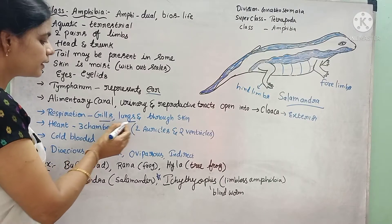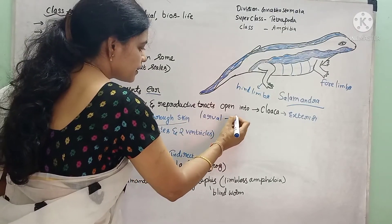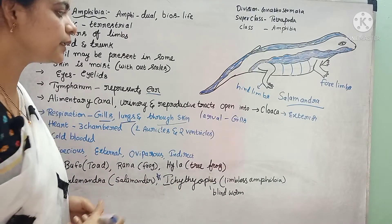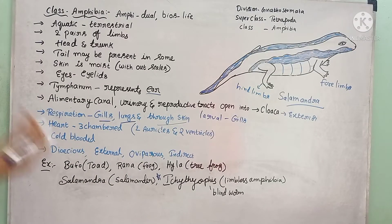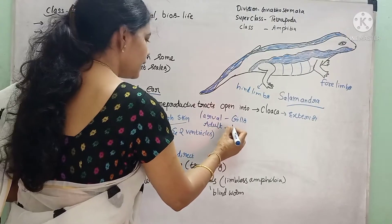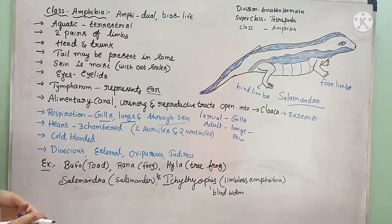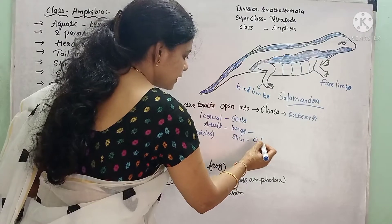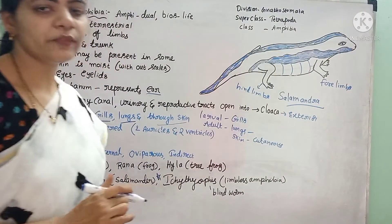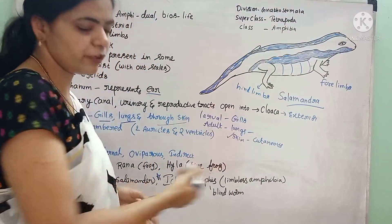Respiration is by means of gills, lungs, and through the skin. Respiration by gills takes place during larval stages, because in larval stages these animals are present in water and respire by gills only. When the animal metamorphoses into an adult, they may respire either by lungs or through the skin. Respiration by lungs is called pulmonary respiration, and if they respire by means of skin it is called cutaneous respiration. Normally these animals prefer to respire by skin, which is why the body is highly moist to absorb dissolved gases from the air.